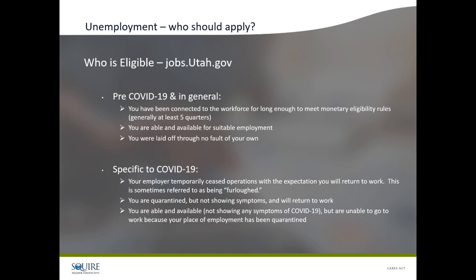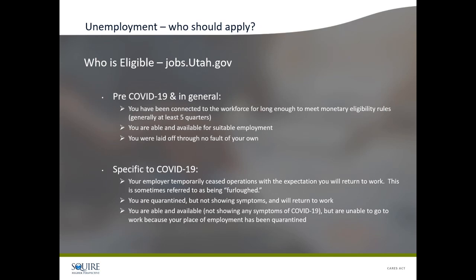In Utah, jobs.utah.gov has all the information and that's where you apply. They're working very hard to get everybody's application submitted and get payments out. Before COVID-19, the country would see around 100,000 unemployment applications per quarter — if it was a really busy quarter, maybe up to 200,000. We're now just about to hit 6 million nationwide in new unemployment applications just since COVID-19.